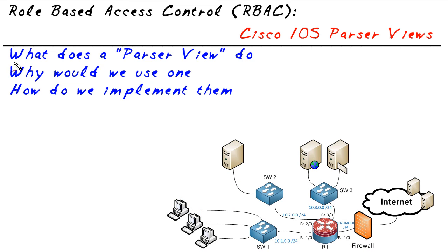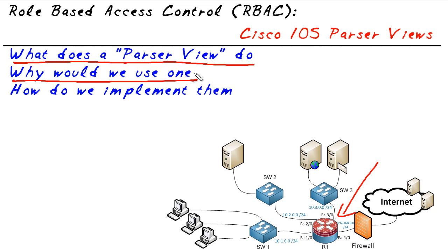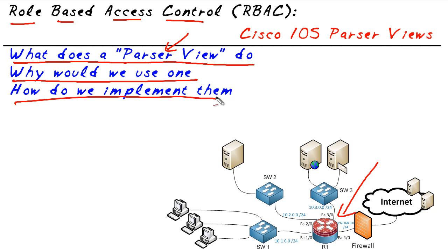In this micro nugget, we've identified what a parser view does — it filters what the user in that view is able to do on the actual Cisco device, what commands they can issue. Why would we ever want to limit commands? Because we might have different groups of people with different responsibilities who may not need the full command set, so we use role-based access control implemented through parser views. From the root view, we created individual views, associated a secret with those views, and told those views exactly what commands are allowed. Then the user logs into that view with the password given to them and is locked down to just those commands.